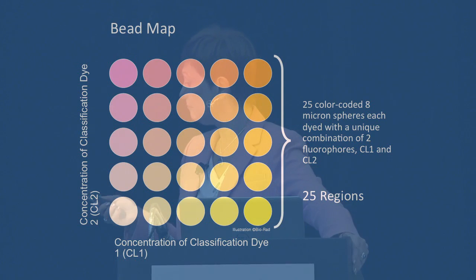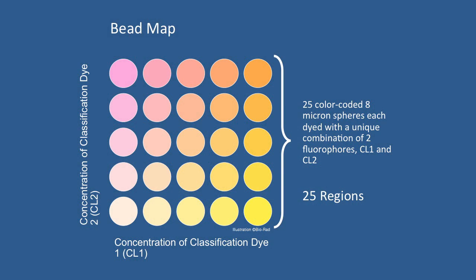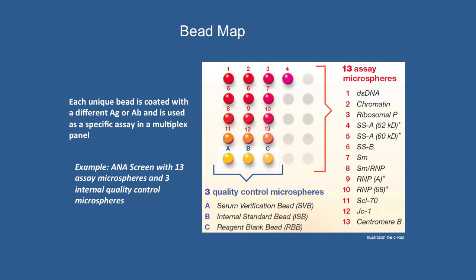Here are 25 color-coded beads, 8-micron spheres, with one fluorochrome on one axis and another on the other. So one particular bead has a high level of one fluorochrome but a really low level of the other, while another bead has the highest of both — allowing you to identify which bead is which. Then you put the antigen on it. Each bead is coated with a unique antigen: bead 1 is double-stranded DNA, bead 3 is ribosomal P, bead 5 is SSA. You can mix them all together because you can identify the bead anyway.